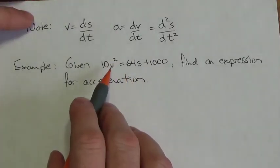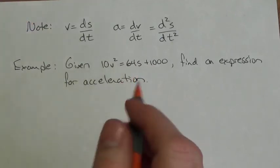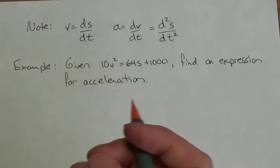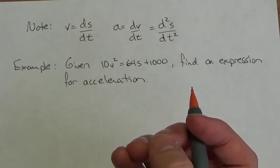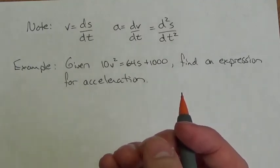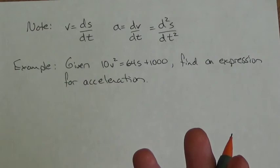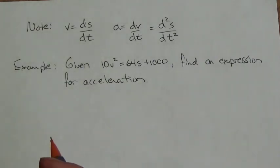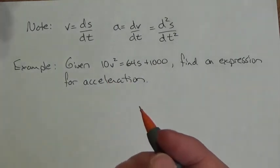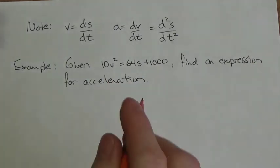Velocity is a function of time. Displacement is a function of time. Time is there — it's just not there explicitly. You're going to have to take the derivative implicitly.